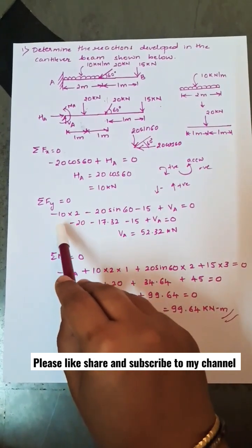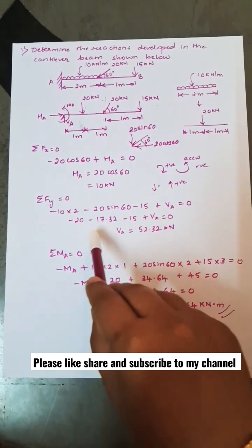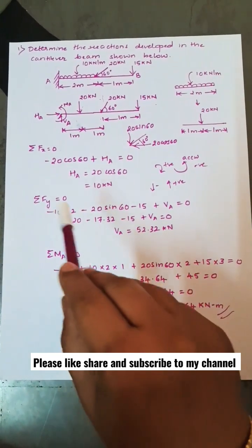So minus 10 into 2, that is UDL, minus 10 into 2 minus 20 sin 60, that is downwards, minus 15 plus Va equal to zero. So Va equal to 52.32 kilonewtons. Taking moments of all the forces, anticlockwise is always negative, clockwise is positive.